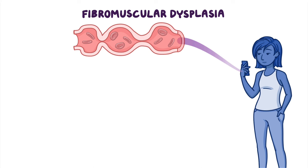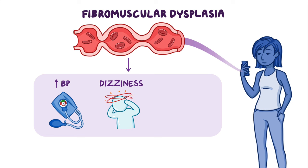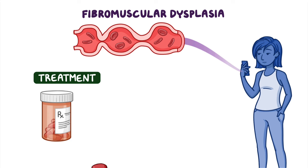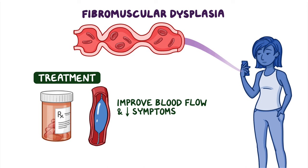Fibromuscular dysplasia is a rare vascular disorder that typically affects young females and is characterized by narrowing of arterial blood vessels, causing symptoms like high blood pressure, dizziness or vertigo, headache, ringing in the ears, and stroke. While there is no cure for the disease, several treatments, including medications and surgical procedures, can be used to improve blood flow and reduce the symptoms.